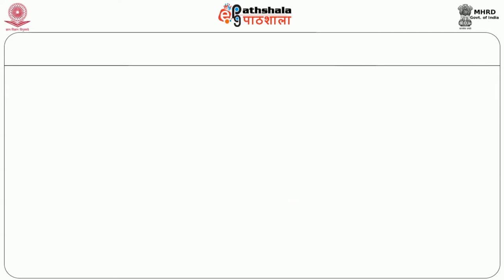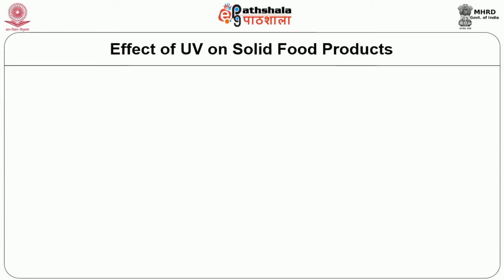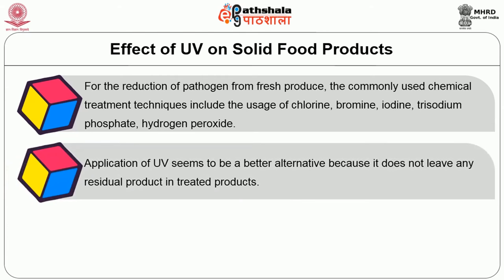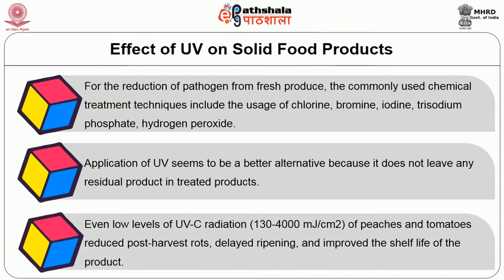For the reduction of pathogens from fresh produce, commonly used chemical treatment techniques include usage of chlorine, bromine, iodine, trisodium phosphate, and hydrogen peroxide. Application of UV seems to be a better alternative because it does not leave any residual product in the treated products. Even a low level of UVC radiation of peaches and tomatoes reduces post-harvest rots, delays ripening, and improves the shelf life of the product.